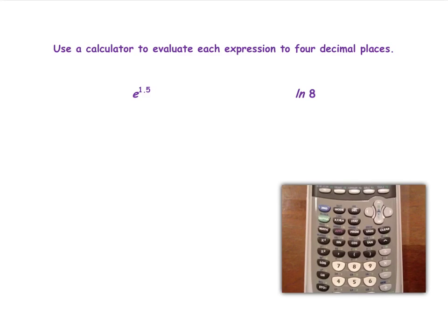We are going to evaluate each expression to four decimal places. Our first example is a base e expression: e to the 1.5 power. What you would do is hit second, then the natural log button on your calculator, put in 1.5, and press enter. When you do, you get 4.4817.